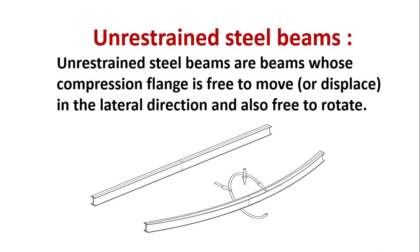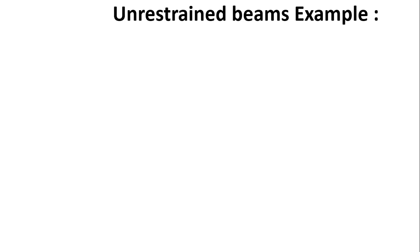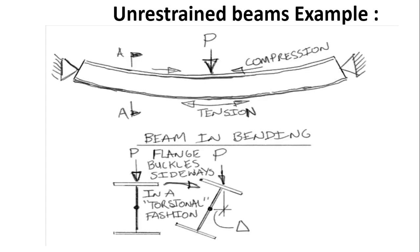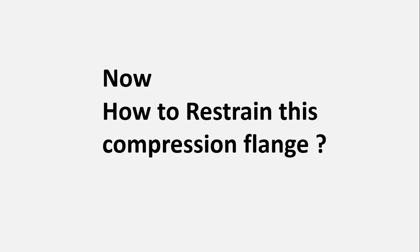For example, consider a simply supported beam with a point load applied at the center. The flanges buckle sideways in a torsional fashion. That is the classic example of an unrestrained beam failing by lateral-torsional buckling.